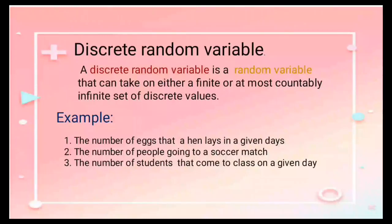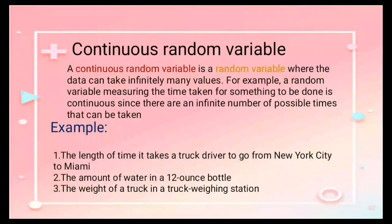Meanwhile, the continuous random variable is a random variable where the data can take infinitely many values. For example, a random variable measuring the time taken for something to be done is continuous since there are an infinite number of possible times that can be taken.